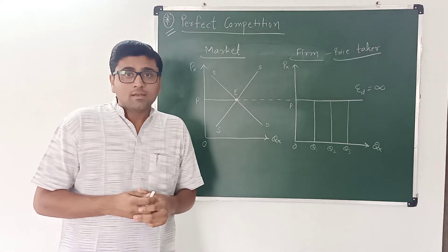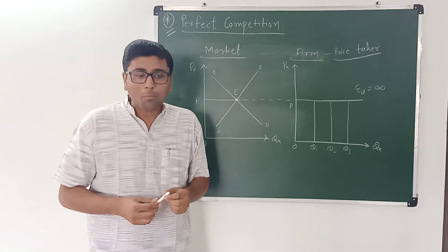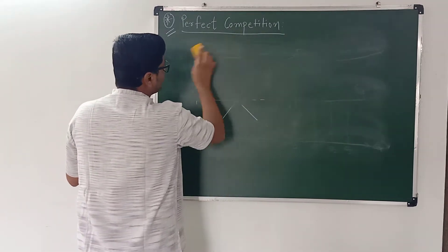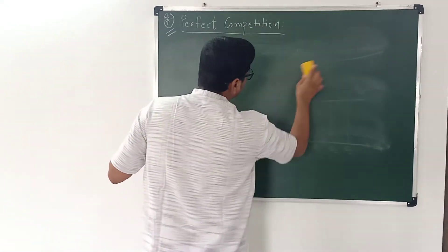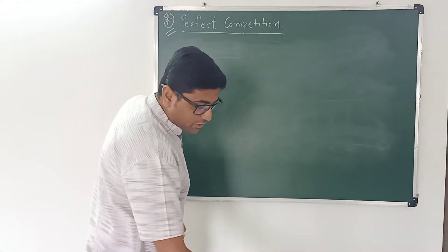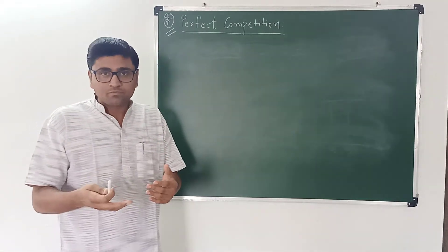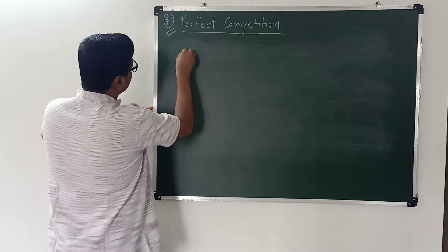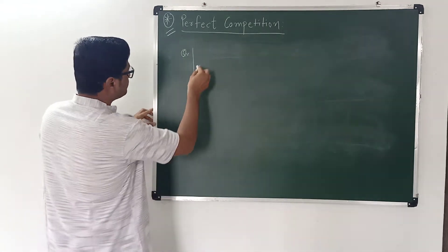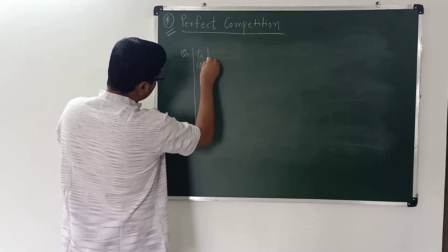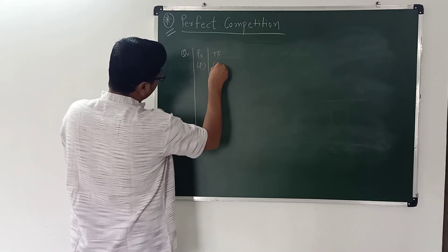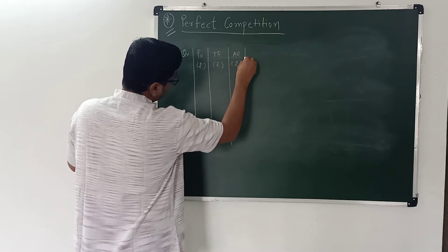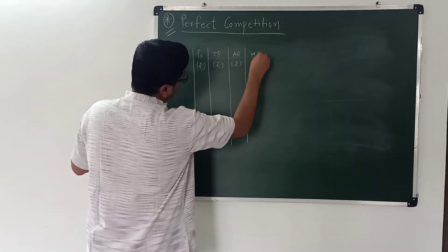Now we are going to talk about the revenue of this perfectly competitive firm. We know that total revenue of a firm is price multiplied by quantity. Average revenue is total revenue divided by quantity. And marginal revenue shows the change in total revenue due to the selling of an additional unit. So here we have columns for quantity of X, price of X, total revenue, average revenue, and marginal revenue.